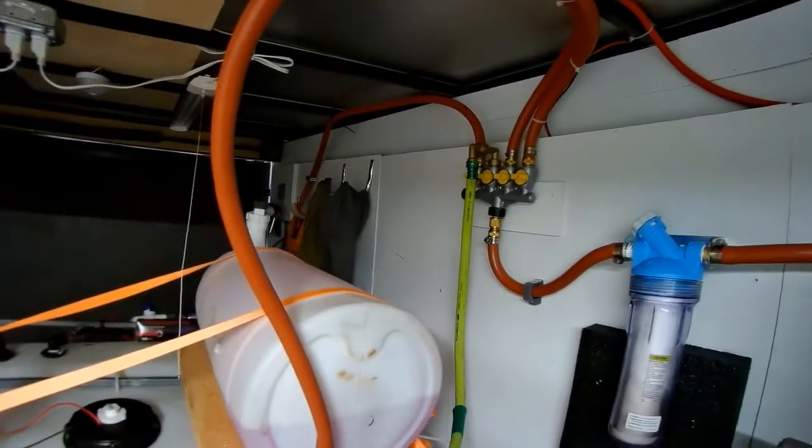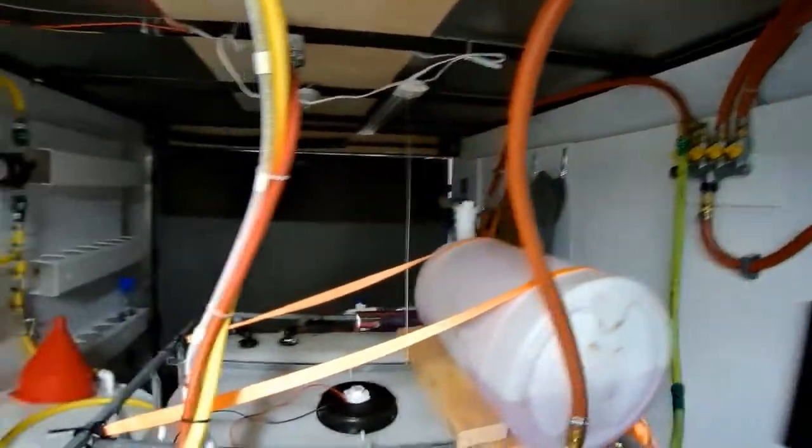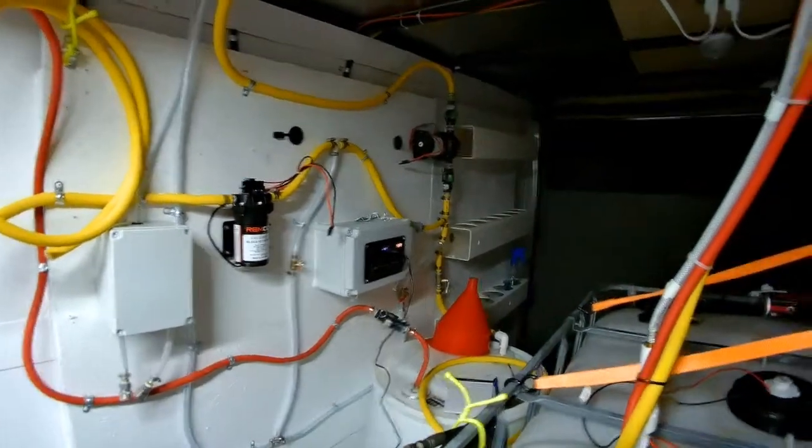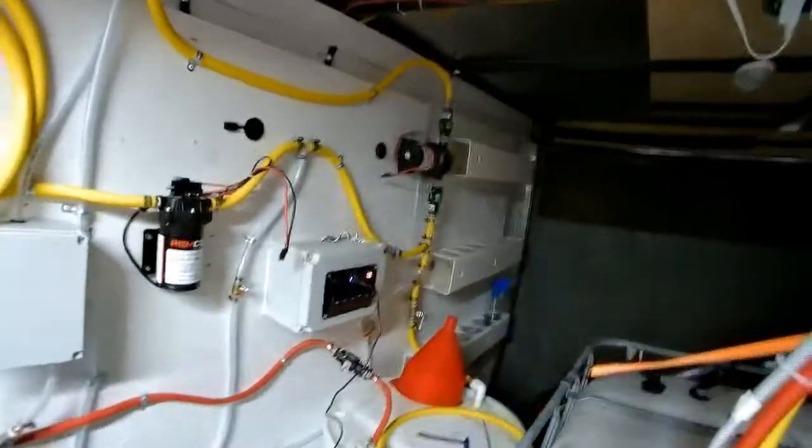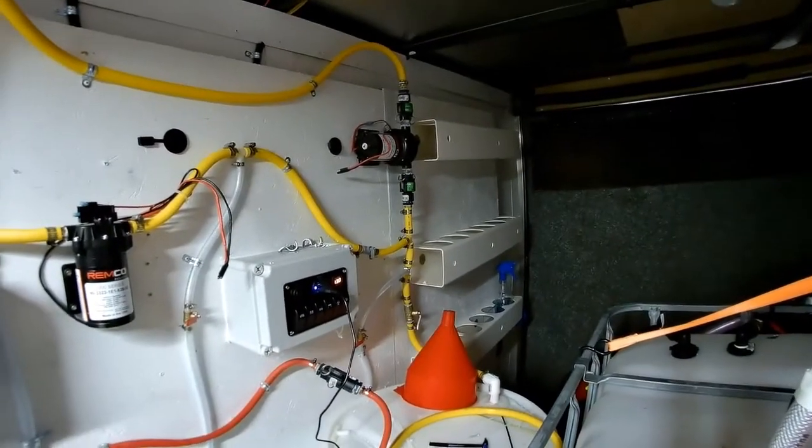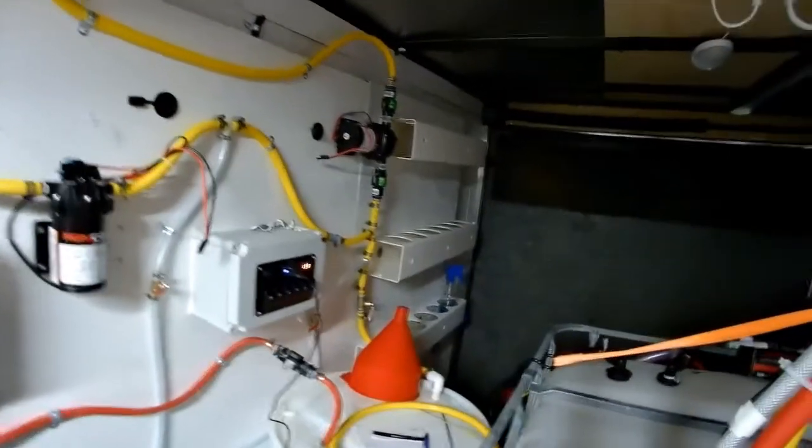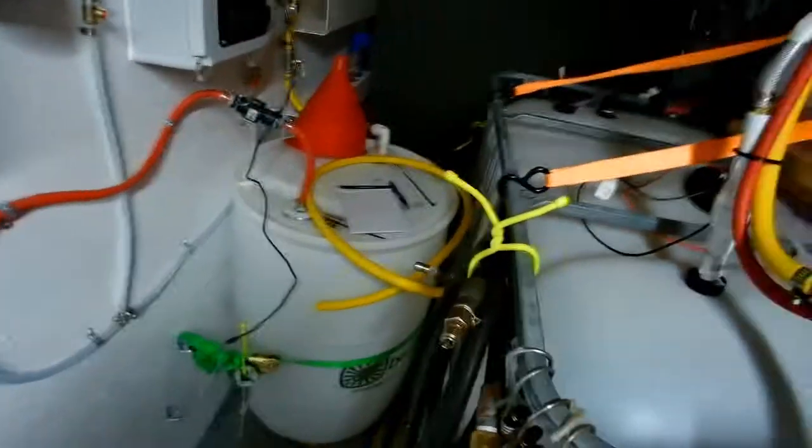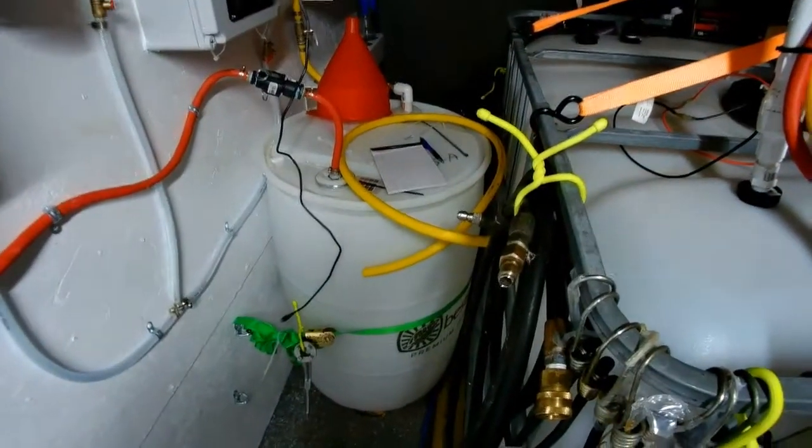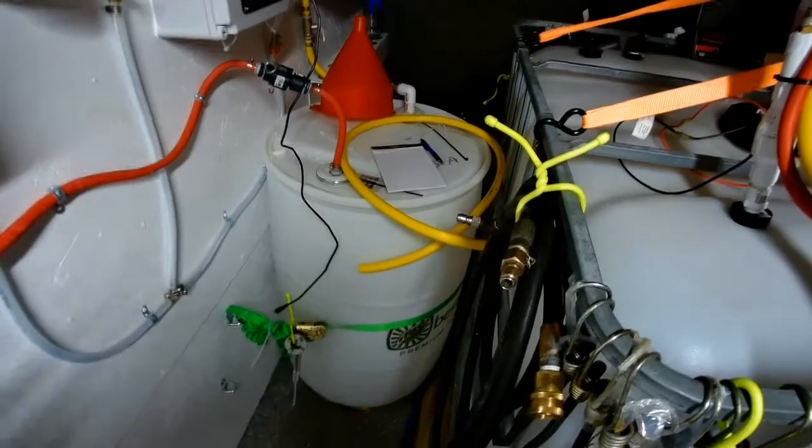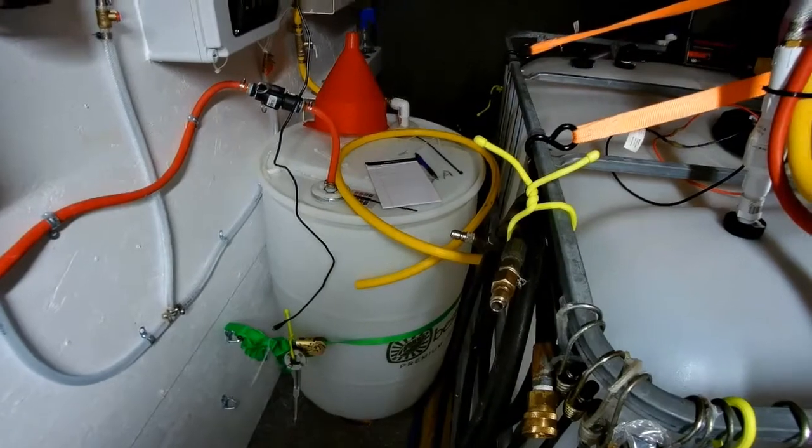On this wall over here is a 12-volt system. These are 12-volt pumps. The one in the back is a transfer pump. I've got a 55-gallon bulk chemical tank here with my cleaning solution. One of the ingredients that I use in mixing my own solution comes in bulk, so I store it in a 55-gallon tank.